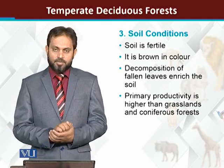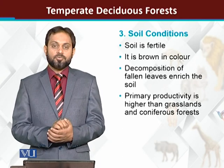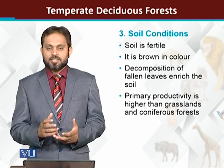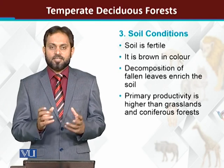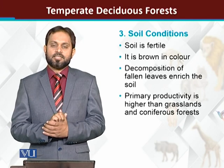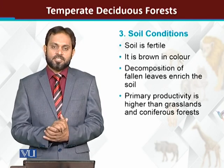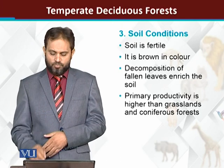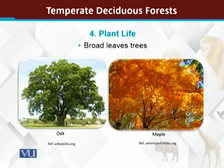Primary productivity is high because plants grow during spring and summer, when the photosynthesis process peaks. Temporary deciduous forests have higher primary productivity than grasslands and coniferous forests. Due to ideal or moderate environmental conditions, a variety of plants are present — different types including herbs, shrubs, and trees.